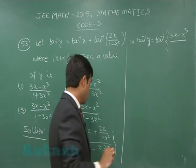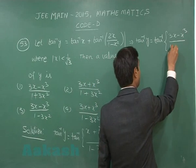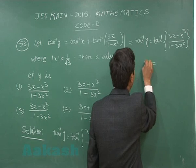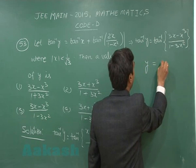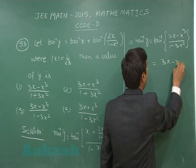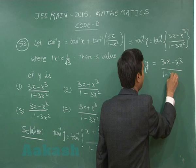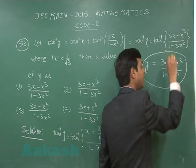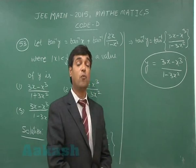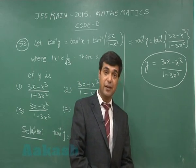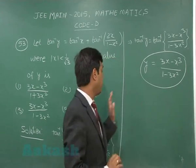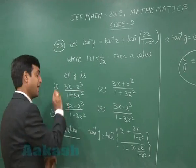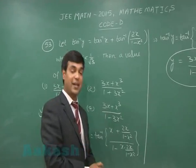In the denominator it becomes 1 − x² − 2x², which is 1 − 3x². The factor (1−x²) cancels out, leaving denominator as 1 − 3x². So y = (3x − x³)/(1 − 3x²). Since |x| < 1/√3, this is valid, and option 3 is correct.